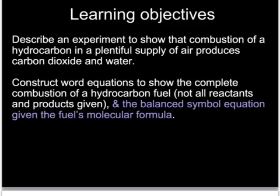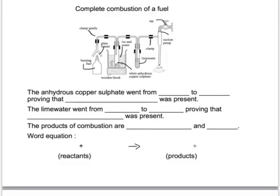The final part of this tutorial will look at how we can show what products are made when a fuel burns and to look at the word and the symbol equations for complete combustion of a hydrocarbon, and that's when there is plenty of air or oxygen present. This diagram shows a classic science experiment which is used to show the products of combustion of a fuel. In the burning fuel bottle, we have, for example, some propane.